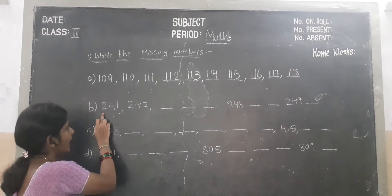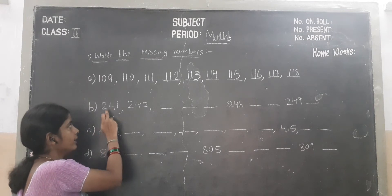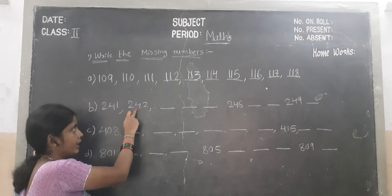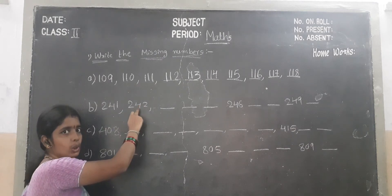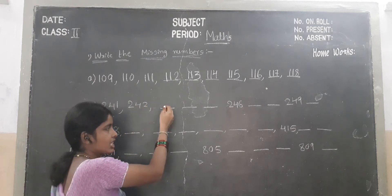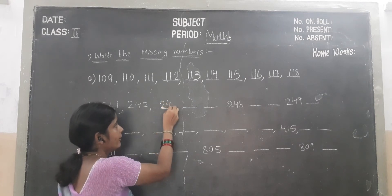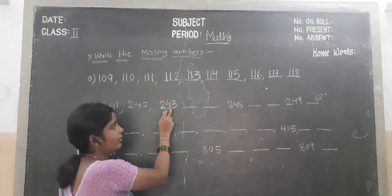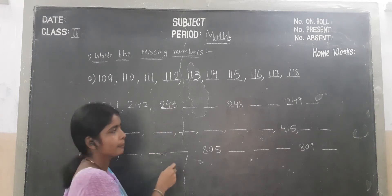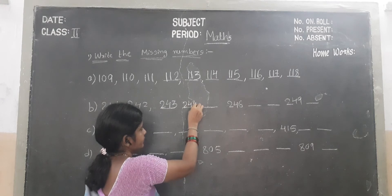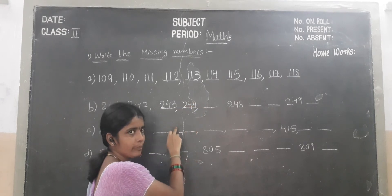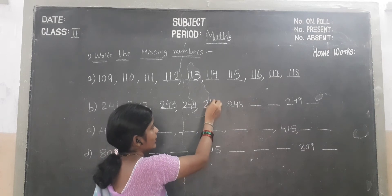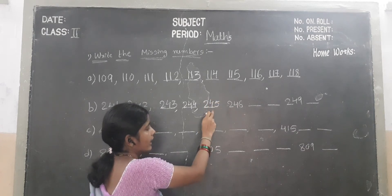Second sum children. 240. We add 1 — which number comes? 241. We add 1 — which number comes? 242. We add 1 — which number will become? 243. We add number 1 — which number will become? 244. We add plus 1 — which number will become? 245.